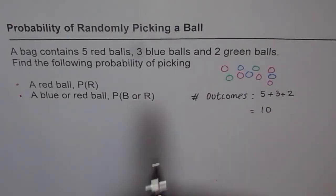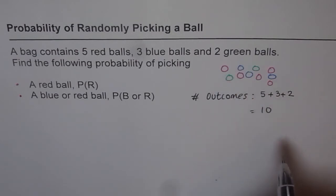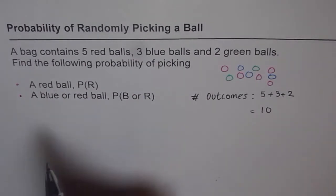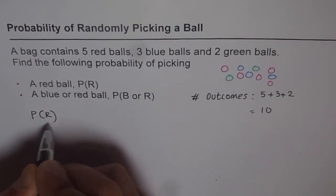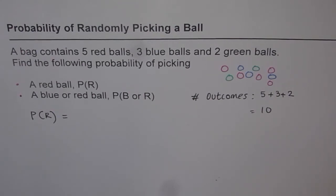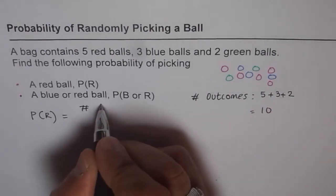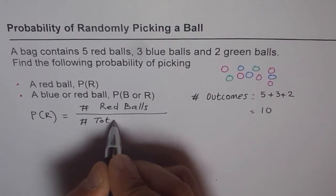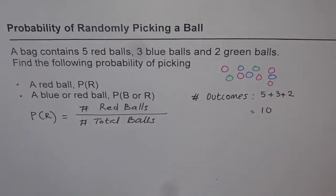When we say that we are randomly picking a ball, you can imagine a bag in which we cannot see — all the balls are mixed up, and you just put your hand in and pick one ball. That is randomly picking up a ball. So the probability of picking a red ball: the probability of picking a red ball is the number of red balls over the total number of balls.